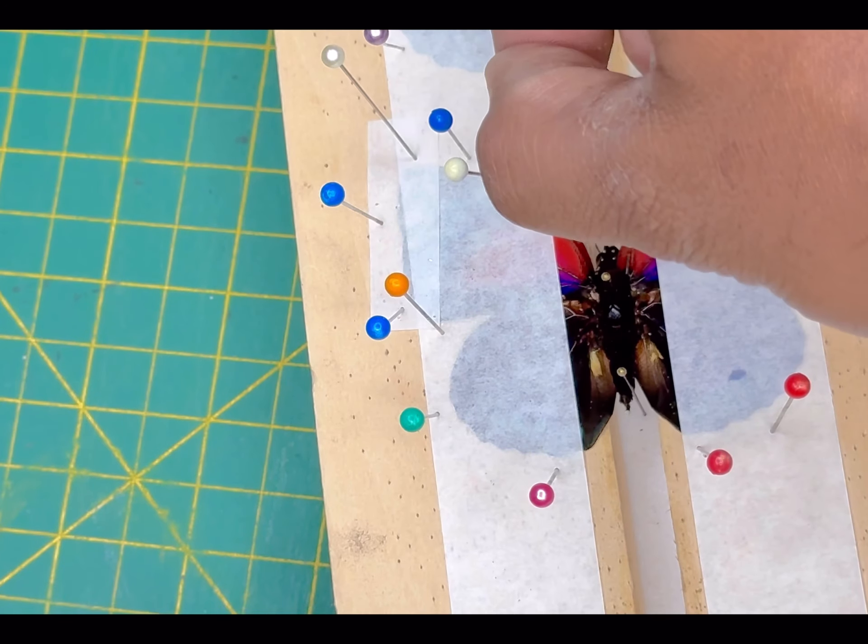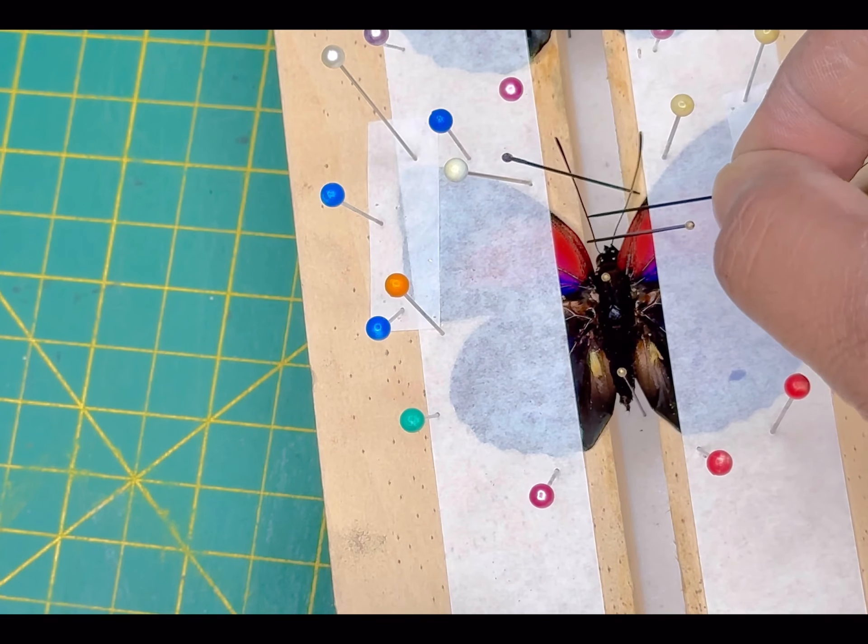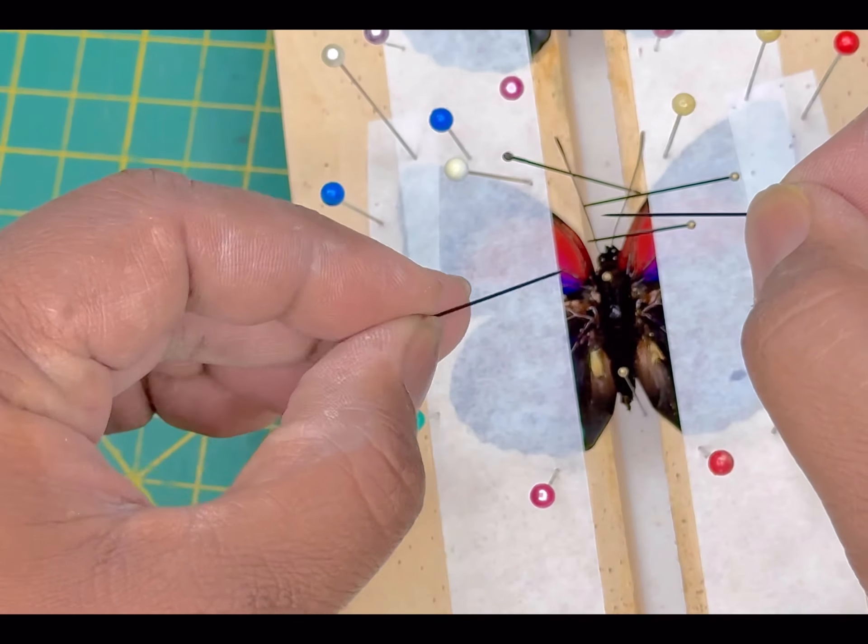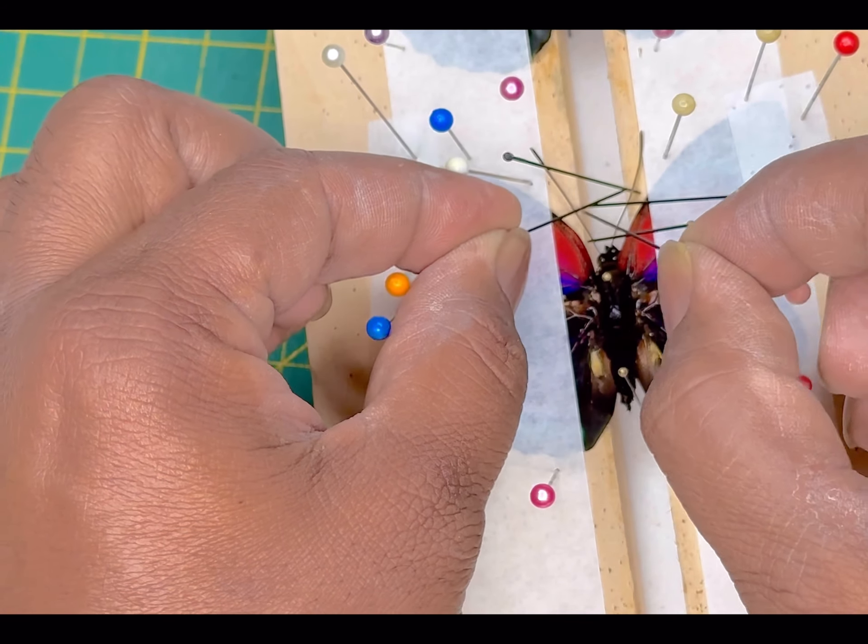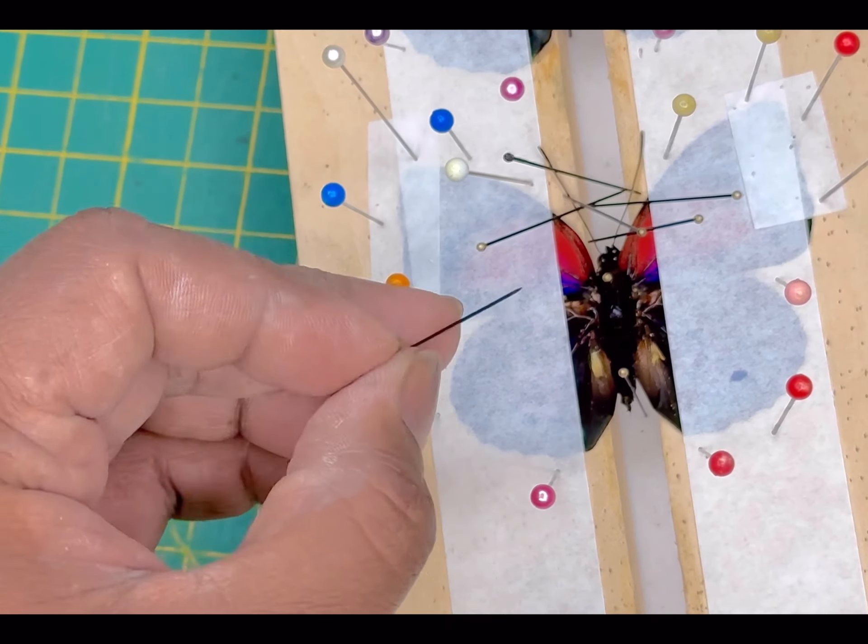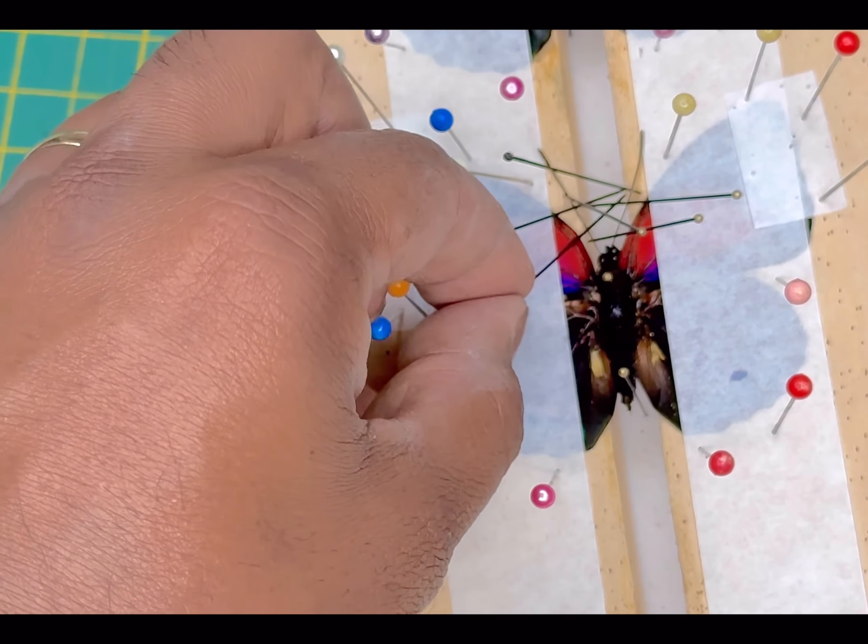And then of course getting the antenna nicely positioned so that too looks like it's in a V-shape. That will require me to position the head to make sure that it's actually straight so that the antenna have a nice V to it.